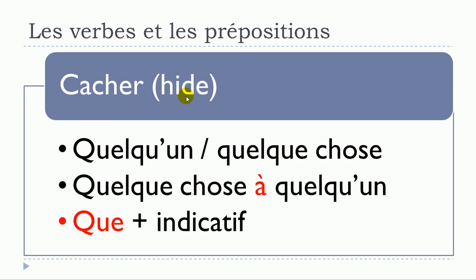The next verb is cacher, which means to hide. Cacher quelqu'un, cacher quelque chose — no preposition. Cacher quelque chose à quelqu'un — also no preposition before. Then cacher que: be careful, because just because you introduce the structure with que does not mean the verb should be at the subjunctive — in this case it should be at the indicatif. So: cacher quelqu'un, cacher quelque chose, cacher quelque chose à quelqu'un, cacher que plus verbe à l'indicatif.